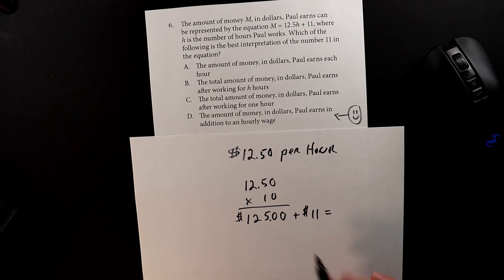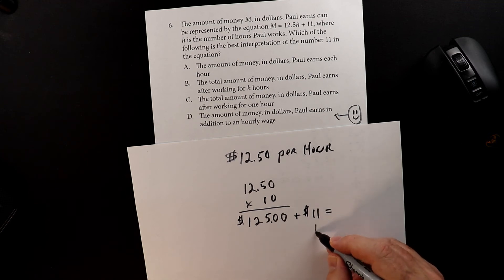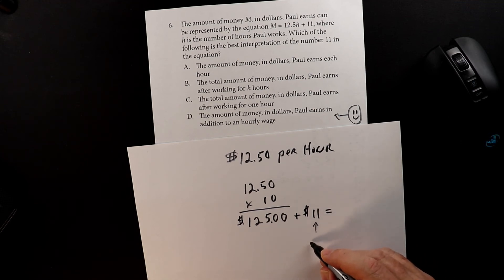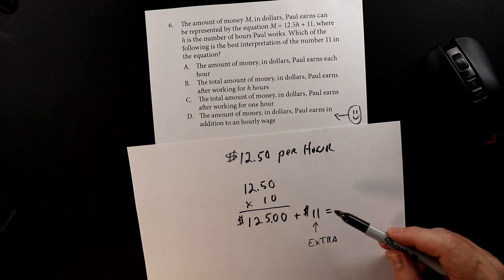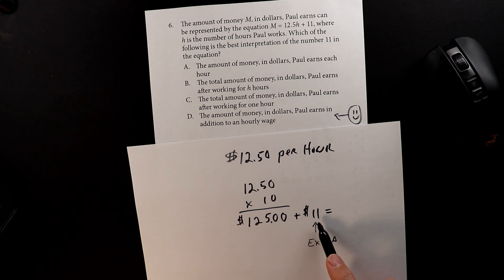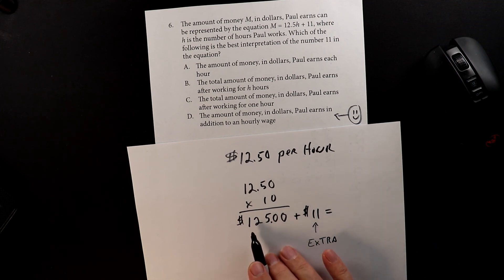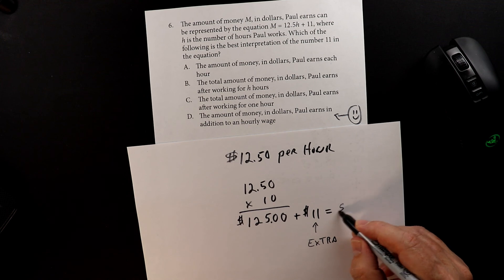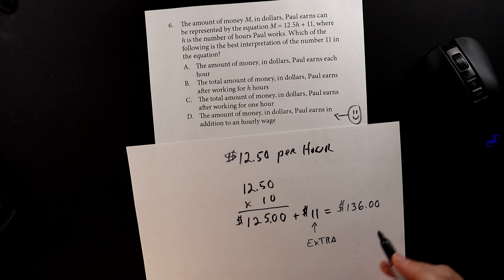I used to work in a restaurant and they would give me — I think it was $10 or $15 a week extra — for laundry to clean my uniform. So this extra amount could be a travel expense, some kind of bonus, or to cover some kind of expense. Some jobs give you a weekly bonus for a lot of different reasons. So he would have made $125 plus $11, which comes out to $136 that week.